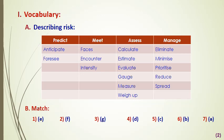He puts four columns asking us to classify the verbs: those that go with predict, those that go with meet, those that go with assess, and finally those that go with manage. Under predict, we can say anticipate and foresee. Under meet, we can have face, encounter, and identify.